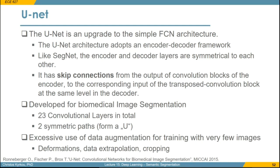UNet was initially developed for biomedical image segmentation. Because data were not plentiful, they used extensive data augmentation — training on very few images using methods like deformations of the image and segmentation map, data extrapolation by mirroring images or parts of images, and cropping and expanding images to increase the training set size. Overall, it is seminal work in semantic segmentation.